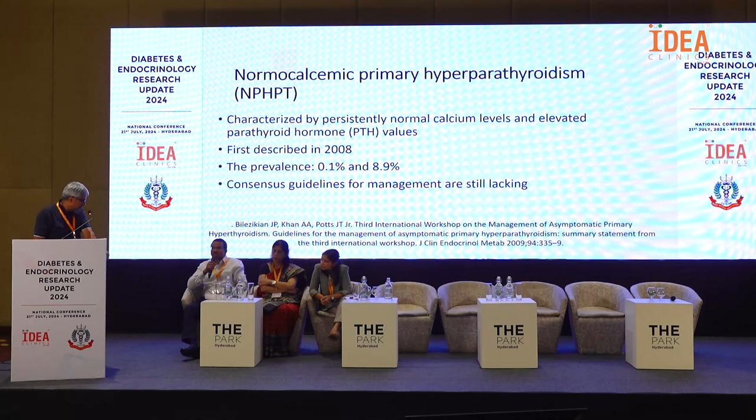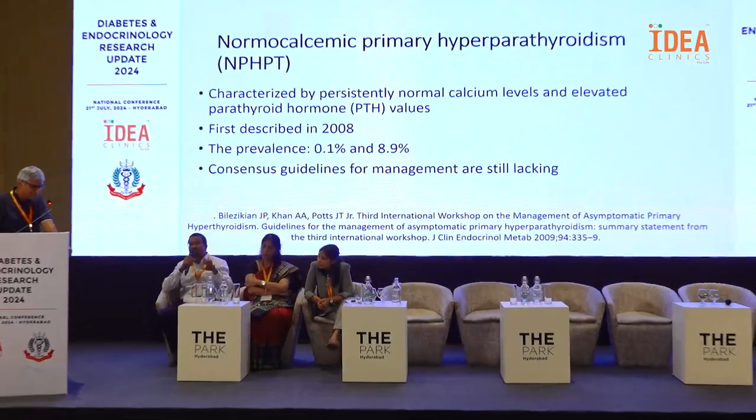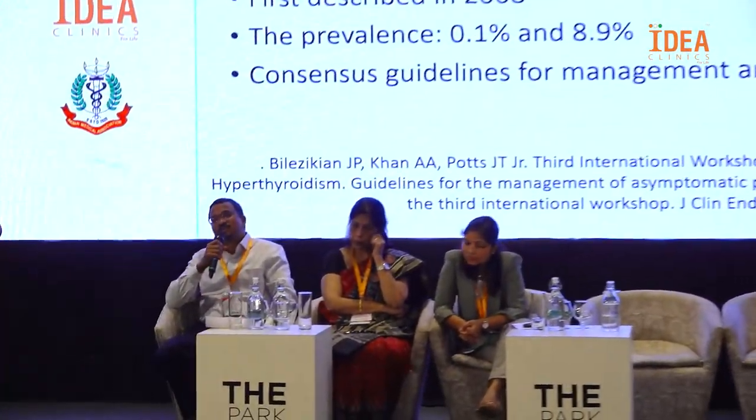Primary hyperparathyroidism with elevated calcium and elevated PTH is well known. There is also asymptomatic primary hyperparathyroidism without end organ damage. With increased health-seeking behavior and routine testing, a new entity has emerged: normocalcemic primary hyperparathyroidism, where calcium is normal and PTH is elevated without end organ damage, sometimes without positive imaging. This entity was first described at the Bilezikian conference in 2008.